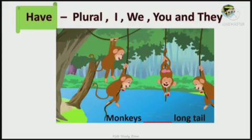So, look at the plurals. Monkeys dash a long tail. Monkeys. More than one hai. Monkeys count kar. One, two, three, four. Four monkeys hai. More than one hai. Wo plural ho ga hai. So, what we are using with plural beta? We are using H-A-V-E have.